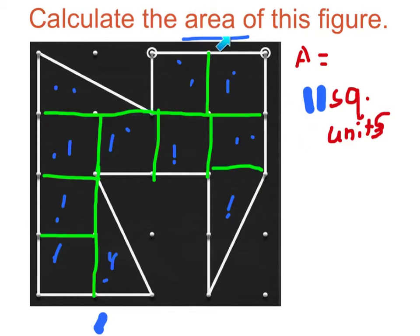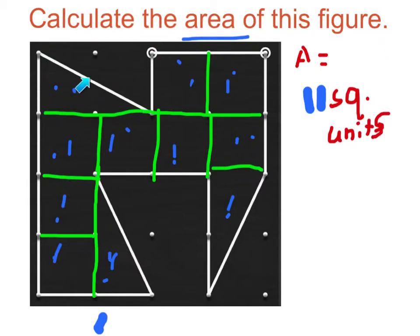This is a shape. You have to calculate the area of this figure. This is a rectangle and it's made of two squares. If you cut them in half, it's one unit.